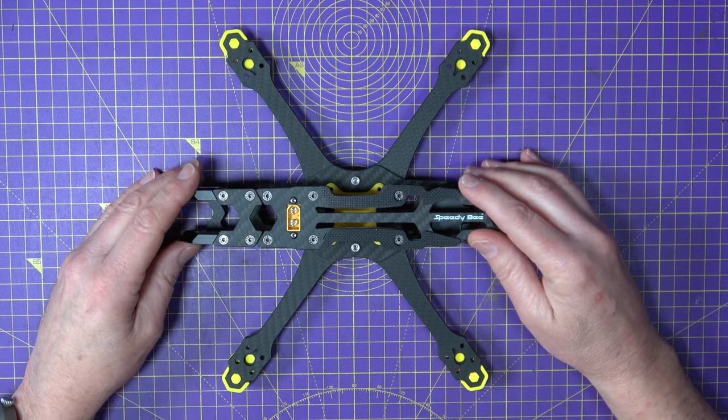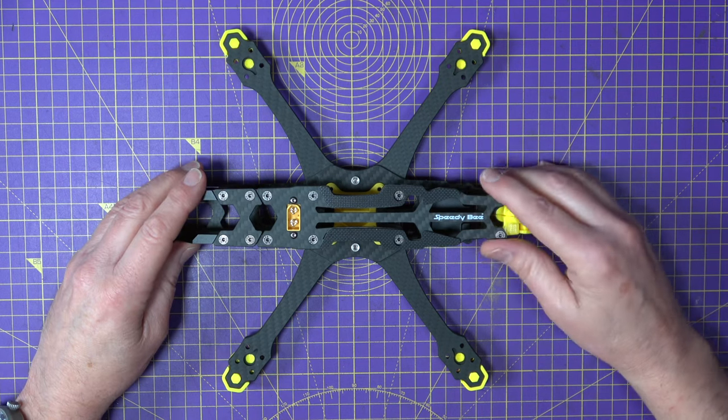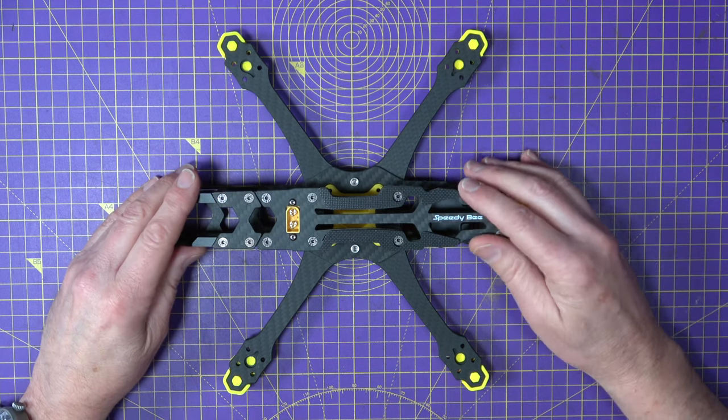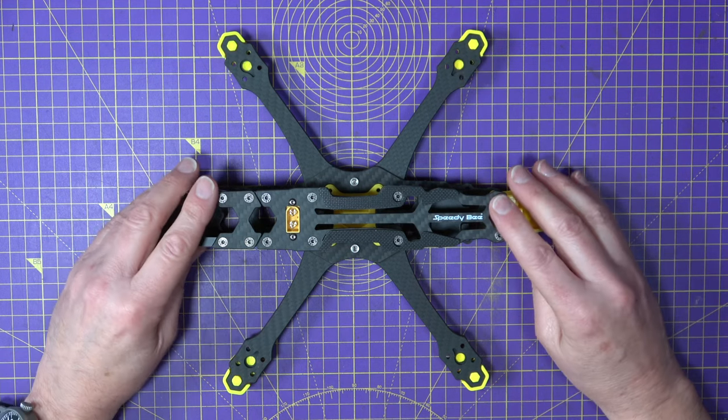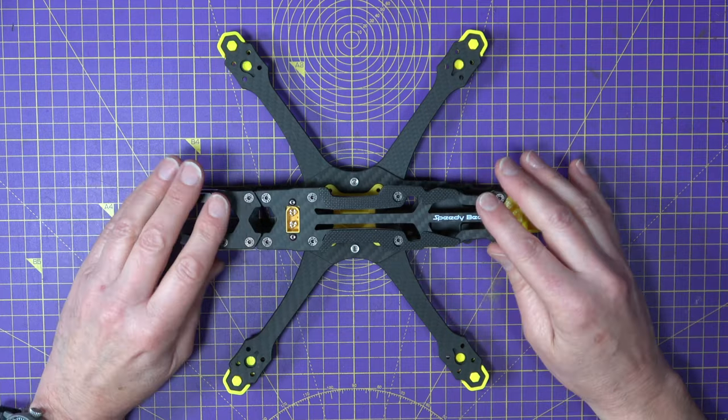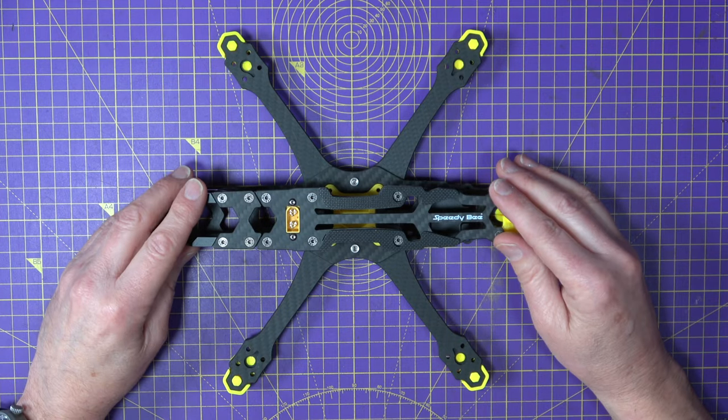Now this comes with a choice of grey or yellow plastics and I really like the signature SpeedyBee yellow, I think it's great. Now I'm not quite sure what motors and props are going to be fitting on this yet but they will be 6S compatible.